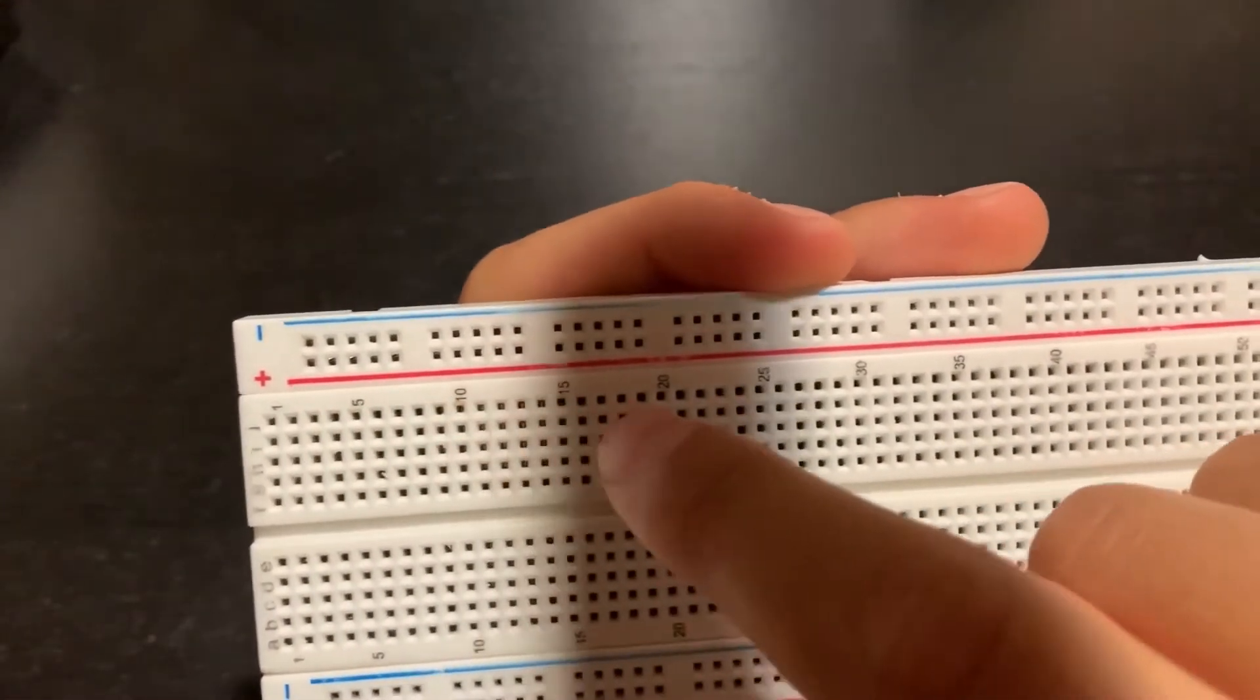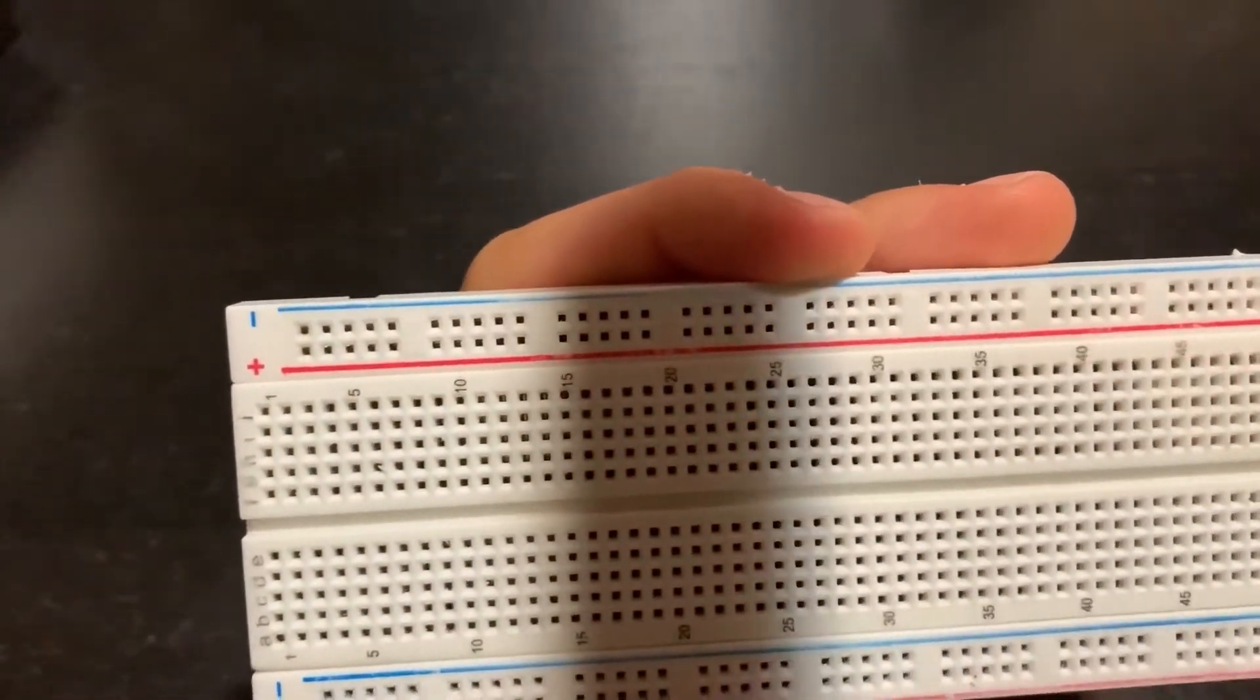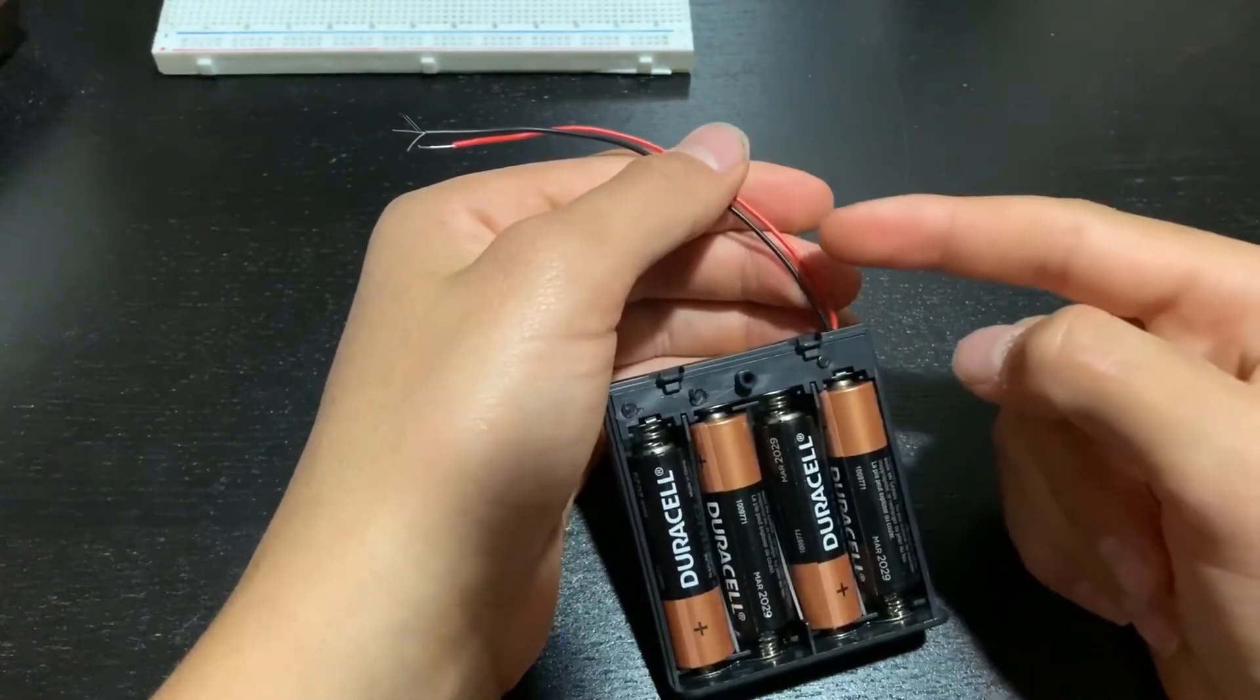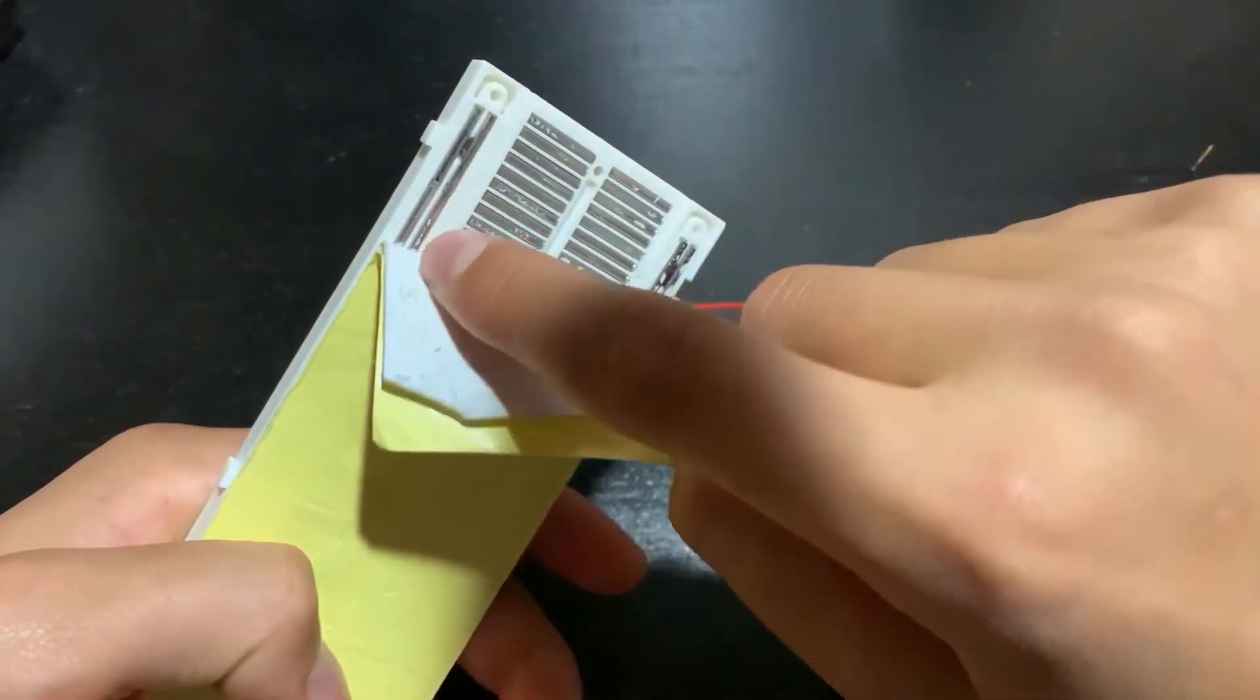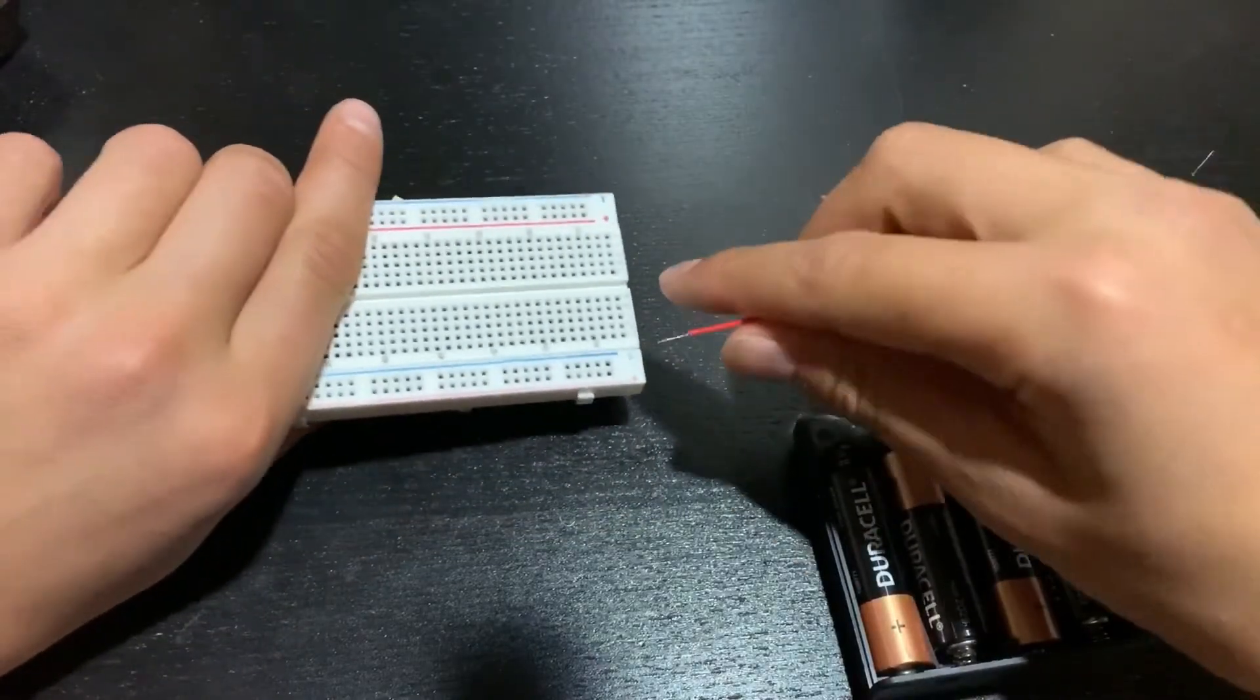The vertical rails are marked positive and negative to make it easier. So let's add our power source. The red wire is always positive, and black is negative. Since both these rails are vertical, we can add the positive and negative wires.